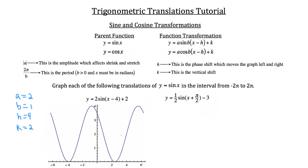Our k = 2, so we go up 2 units. The standard parent function y = sin(x) enters the graph at the origin going up. Since we still have a positive sine value, it should still be going up as it enters. However, our graph has been shifted 4 units to the right and 2 units up, so going 4 units right and 2 units up gives us where our graph comes into play — that's where the origin was translated to.